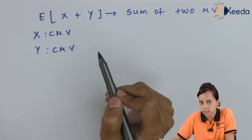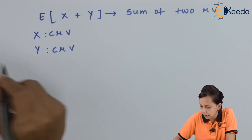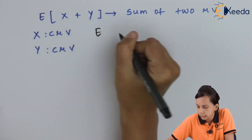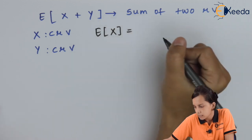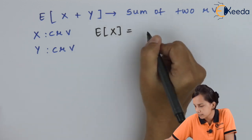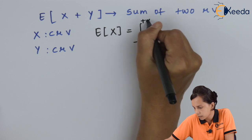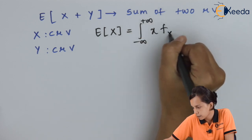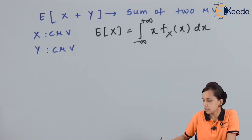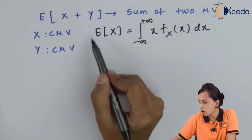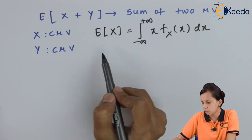Let us proceed towards the solution. By the definition of mean, if I have a random variable capital X, then the mean E of X is defined as the integral from minus infinity to plus infinity of X times f_X(x) dx. This mathematical term is defined for a single random variable.